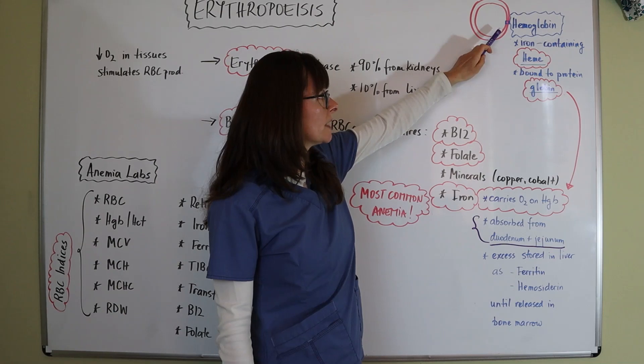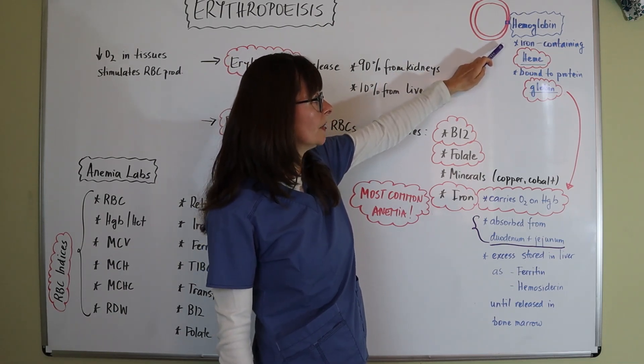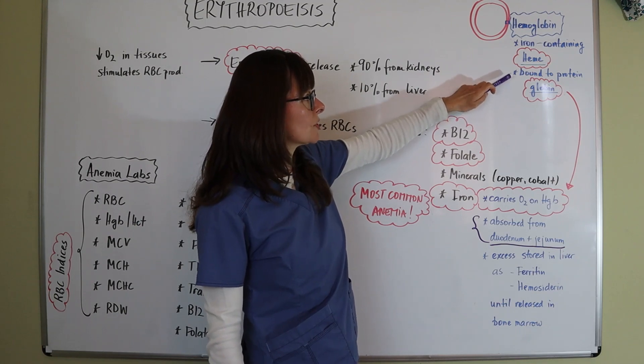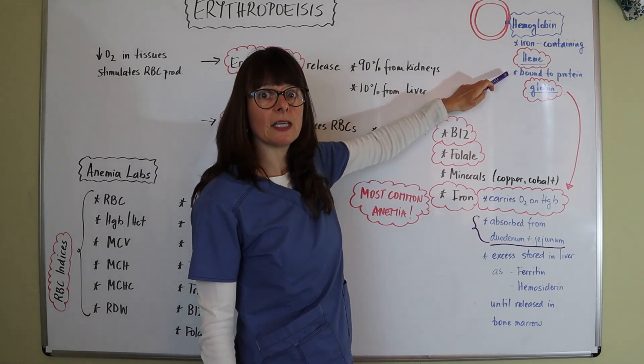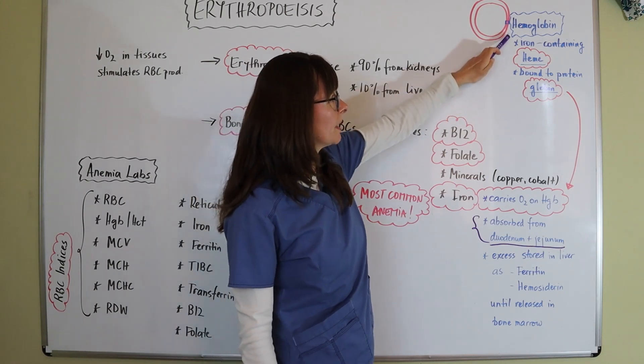And that contains two parts, which is the heme portion, which contains the iron, and then the globin, which is the protein that heme is bound to. So heme and globin makes up hemoglobin.